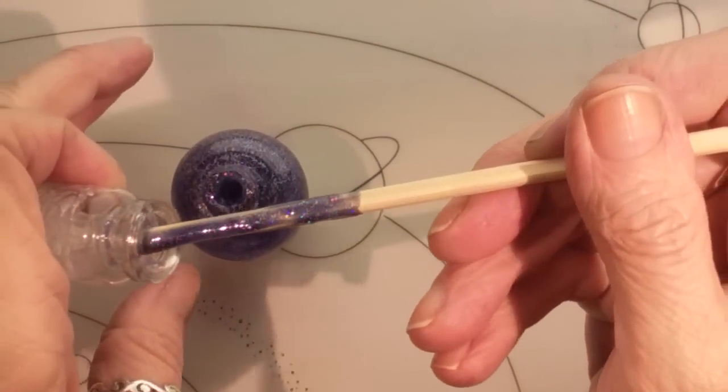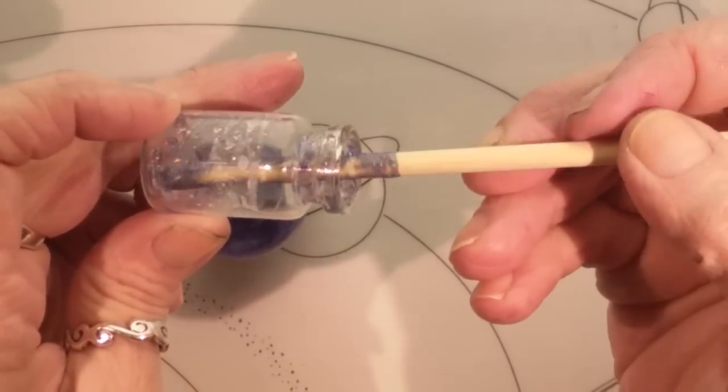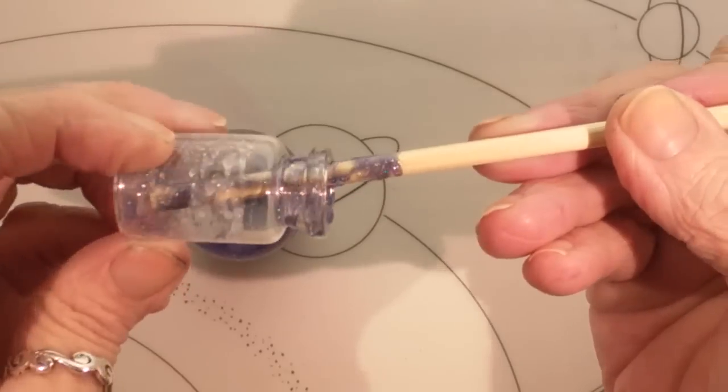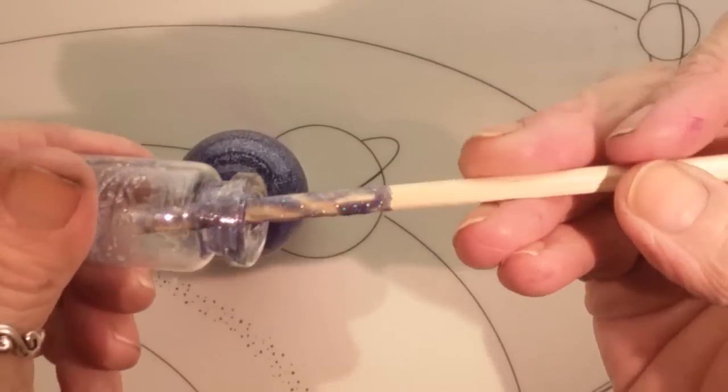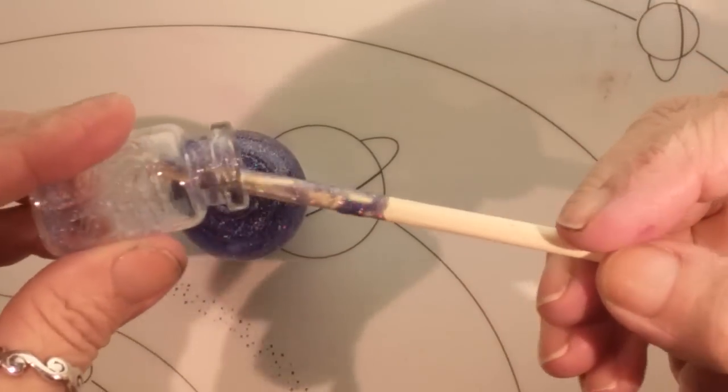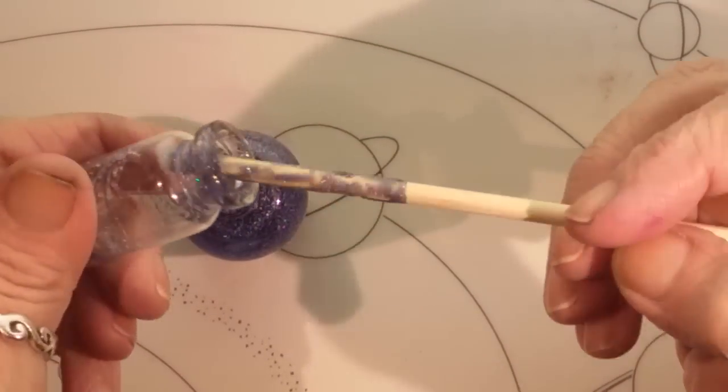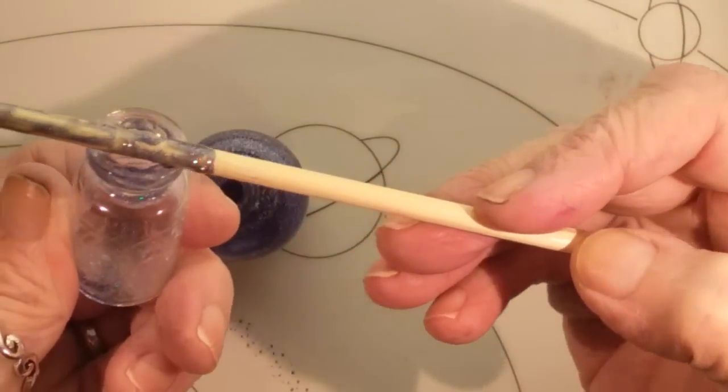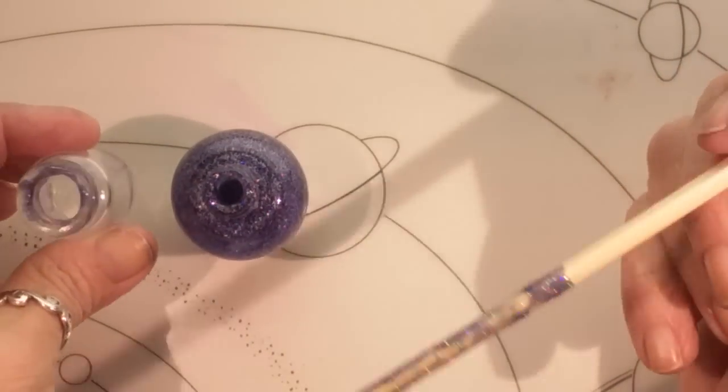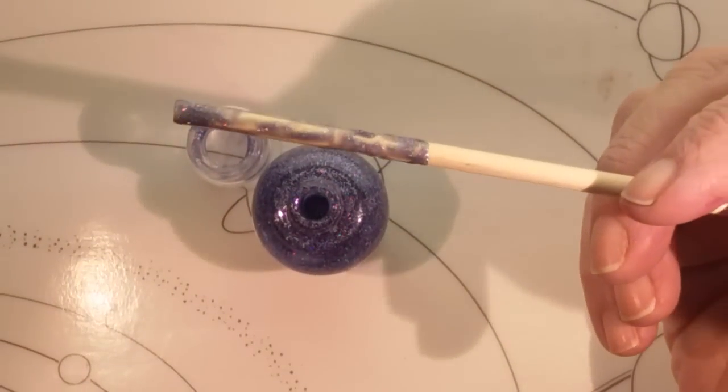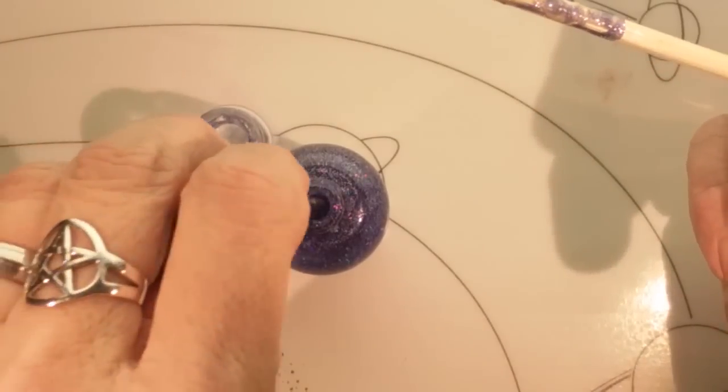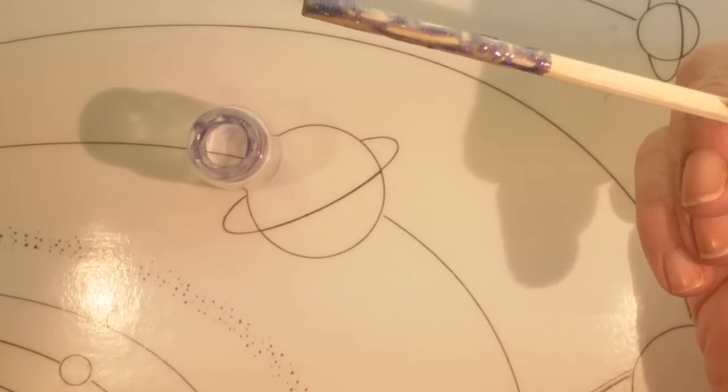Let me do that one more time. And then we're going to start adding our cotton balls. So you just see it's kind of randomly in there. And I'll use the same stick to push our cotton balls in, so that will also get glitter on it.